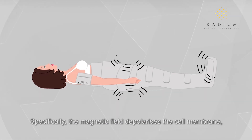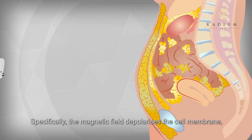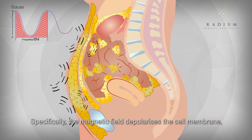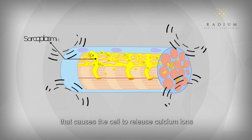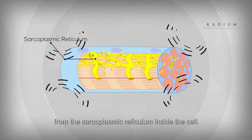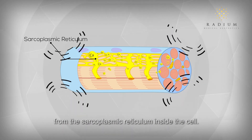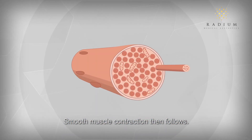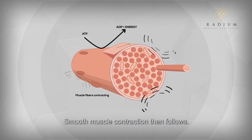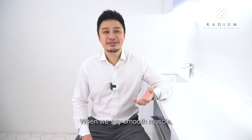Specifically, the magnetic field depolarizes the cell membrane and causes the cell to release calcium ions from the sarcoplasmic reticulum inside the cell. Smooth muscle contraction then follows.